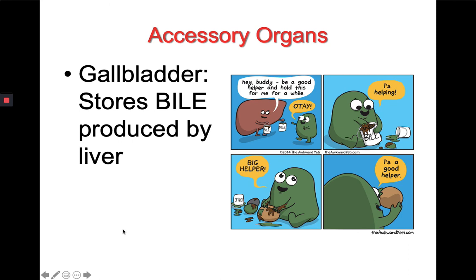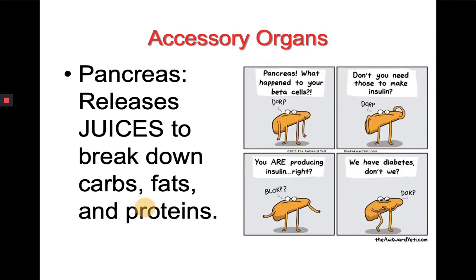The next accessory organ is the gallbladder. The gallbladder stores bile produced by the liver and releases it when needed. The gallbladder can compact that bile into stones, which can make a person very sick. And finally we have the pancreas. The pancreas releases juices to help break down carbohydrates, fats, and proteins. These juices go into the small intestine. The pancreas is also an important endocrine organ, which we will talk about when we discuss the endocrine system.